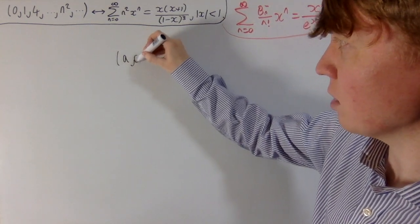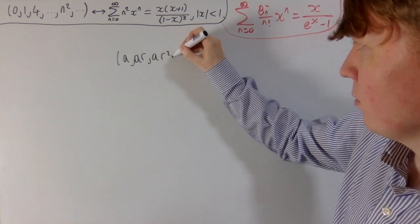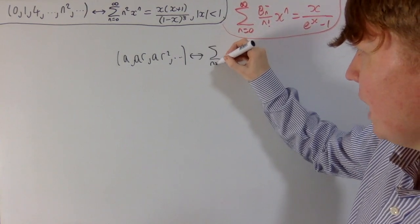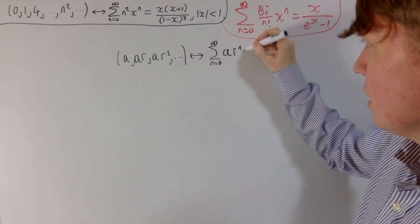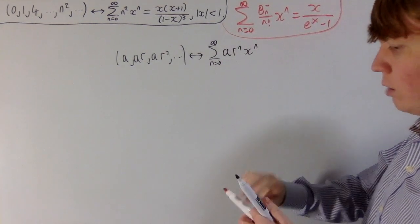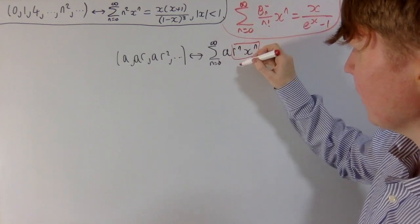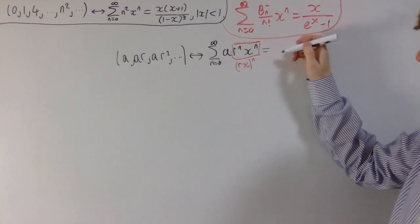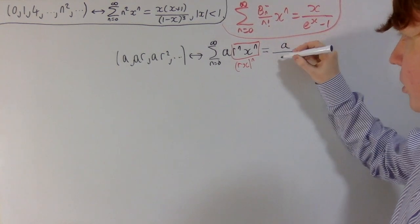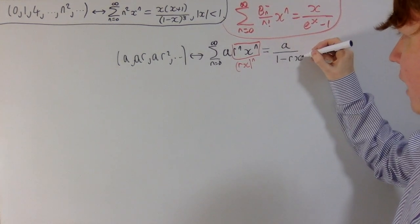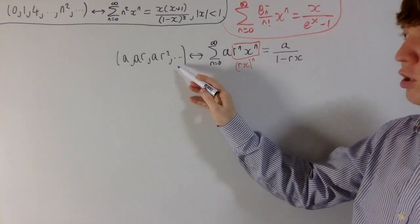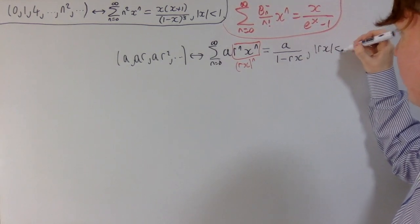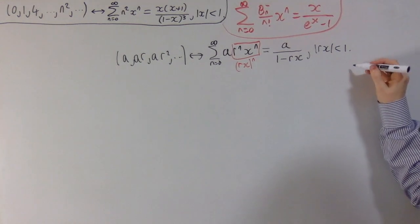Let's look at a geometric sequence. The geometric sequence corresponds to the sum from n=0 to infinity of a·rⁿ·xⁿ. To evaluate this, you just spot that rⁿ·xⁿ = (rx)ⁿ, which tells you this is just a geometric sum. Using your formula, you get a/(1-rx) as your generating function for this geometric sequence. You even get the radius of convergence for free: it converges when |rx| < 1.